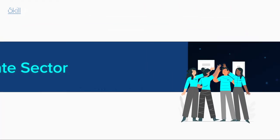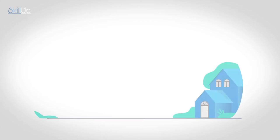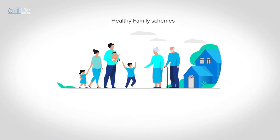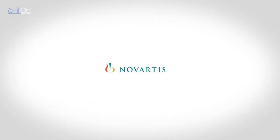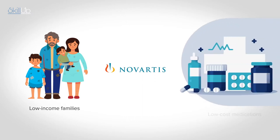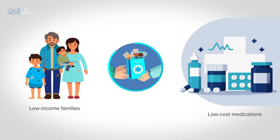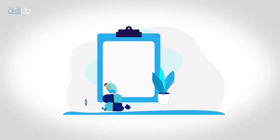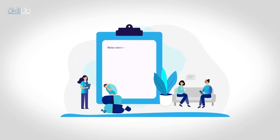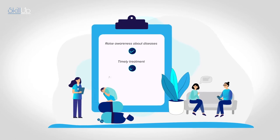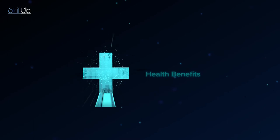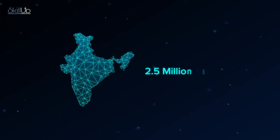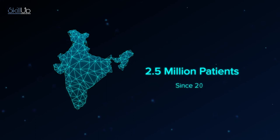On the corporate side, in 2007, Novartis rolled out its Healthy Family Schemes, a for-profit initiative in India, Kenya, Uganda and Vietnam. Under this scheme, Novartis provided low-income families access to low-cost medications. This corporate social innovation stands out because, besides providing access to better healthcare, this initiative employs local women as health educators. These women raise awareness about diseases, timely treatment and preventative measures against common diseases. This initiative has brought direct health benefits to 2.5 million patients across India alone since 2010.